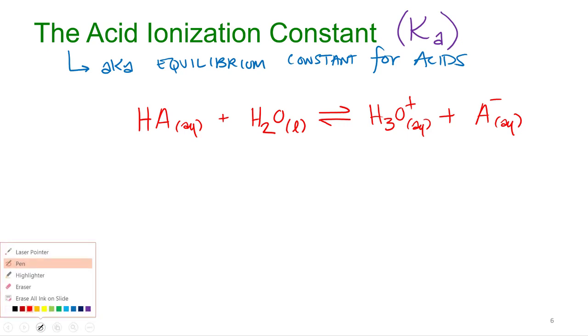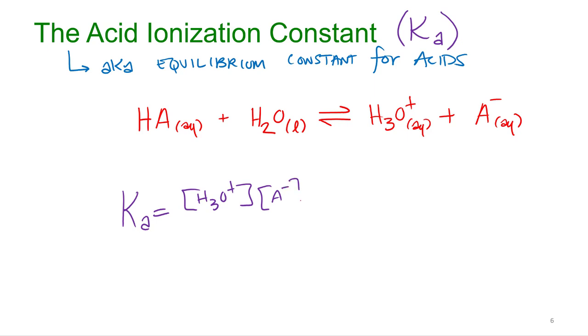So let's write it out. K-A equals H-3O-plus times A-minus all over H-A. Oh, I forgot water. I didn't forget water? I don't need it for water? Oh, phew. Good thing I didn't put it there. Yes, the liquid, so it would be a zero-order reactant.